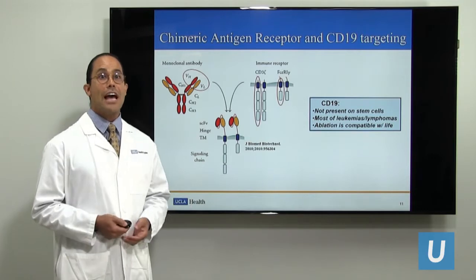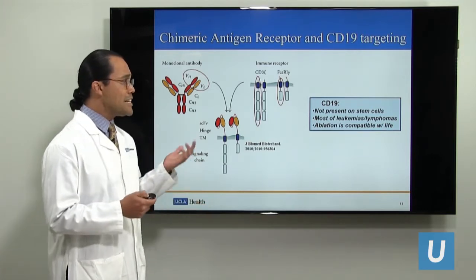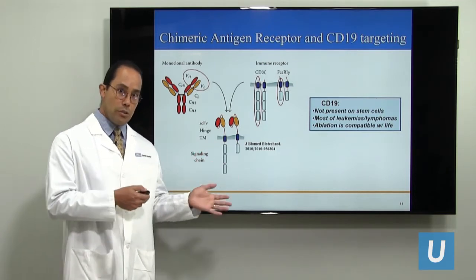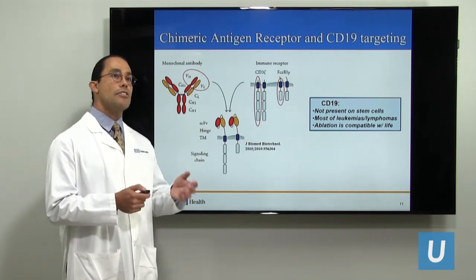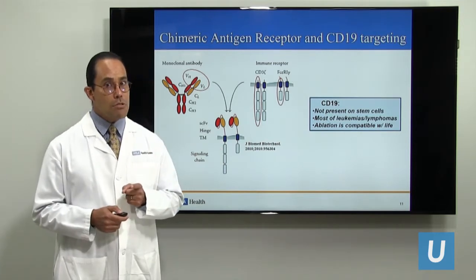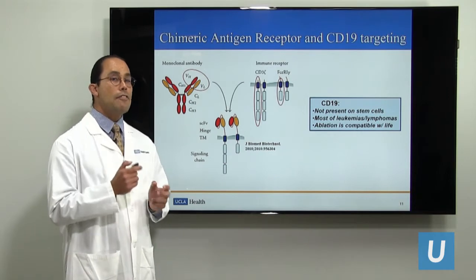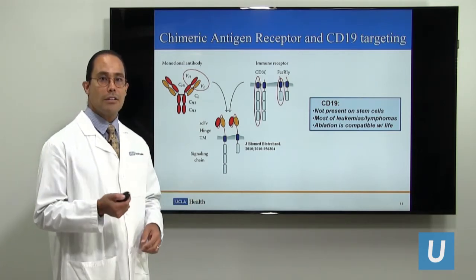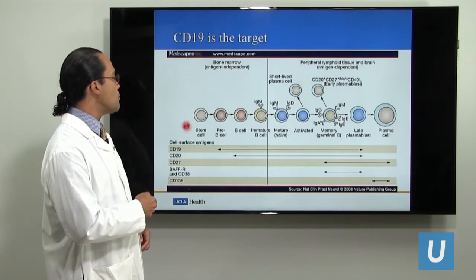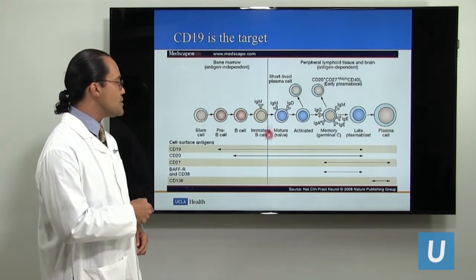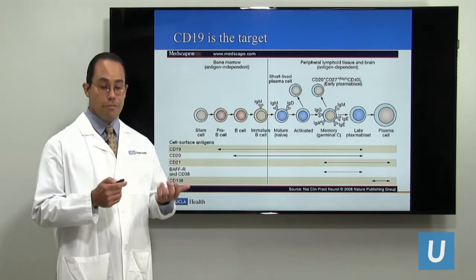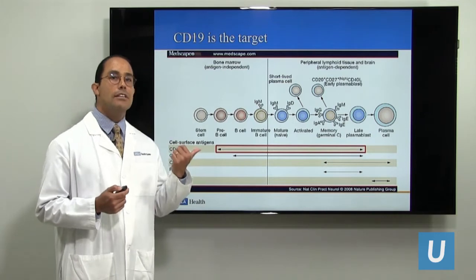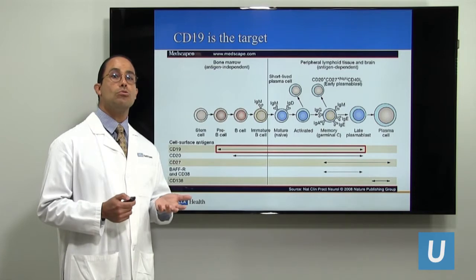The target chosen for CAR T-cell therapy is the molecule called CD19. CD19 is expressed on many lymphomas and leukemias but is not expressed on bone marrow stem cells — the cells that create the whole blood and immune system — so it won't harm those critical cells. Some normal B cells do carry CD19, but even if all B cells are wiped out, patients can survive by receiving immunoglobulins. Here is a graph showing normal B-cell development; for each stage there is a chance of leukemia or lymphoma arising, and CD19 is expressed in most of these phases, making it a valuable target.